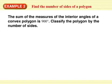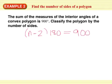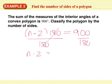Example 2. The sum of the measures of the interior angles of a convex polygon is 900. Classify the polygon by the number of sides. We're doing this one backwards. And this is my equation. (n-2) times 180 gives me the measurement of the interior angles. We know that this time. So I need to solve for n. I'm going to divide both sides by 180. n minus 2 equals 5.